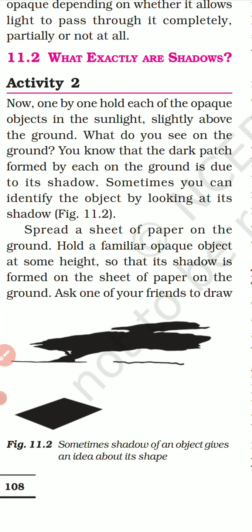Since you are an opaque object, you are not allowing the light to pass through you. So light passes through the sides, and the area covered by your body structure doesn't have any light — that area remains dark, while the rest of the area remains lighted. Hence you see a dark patch the size and shape of your body on the ground. The dark patch formed on the ground is due to your shadow.